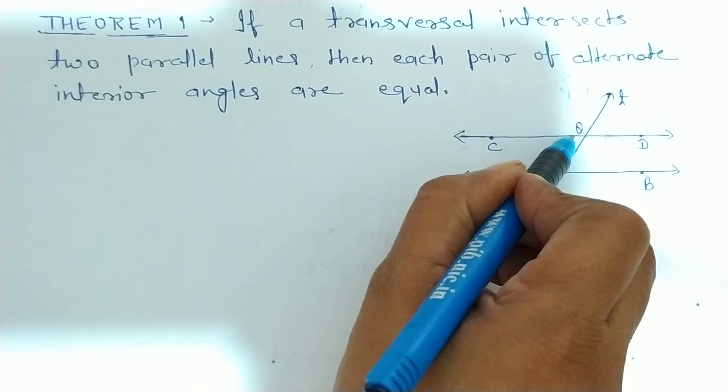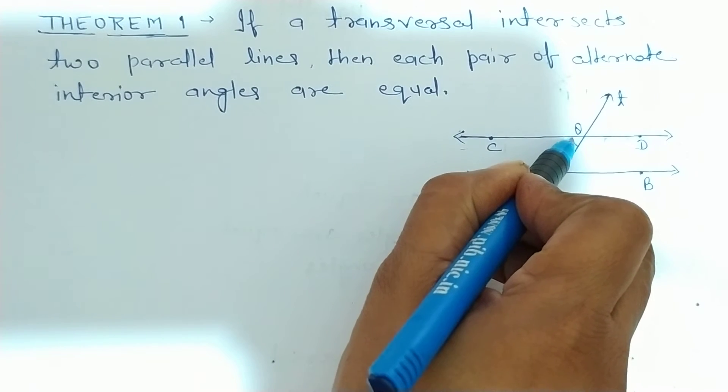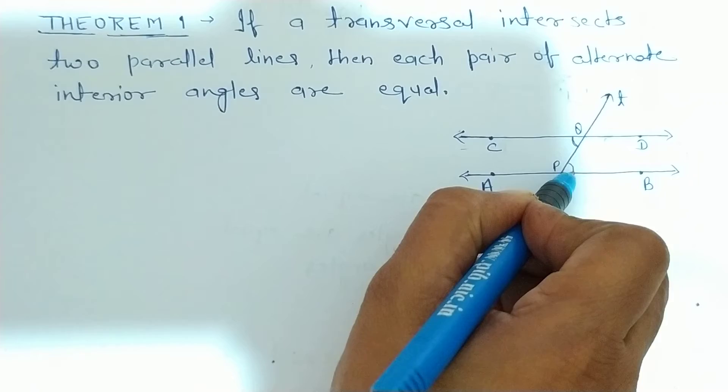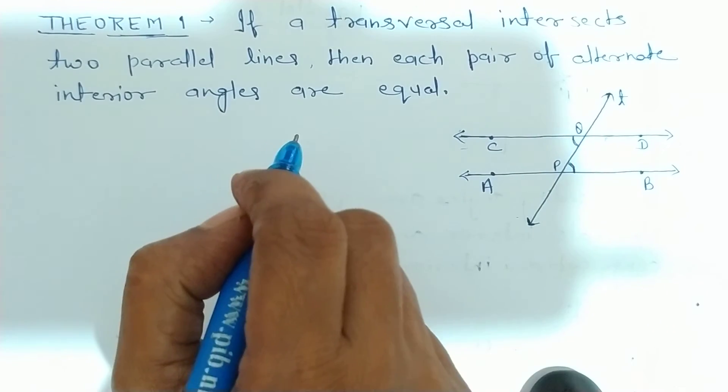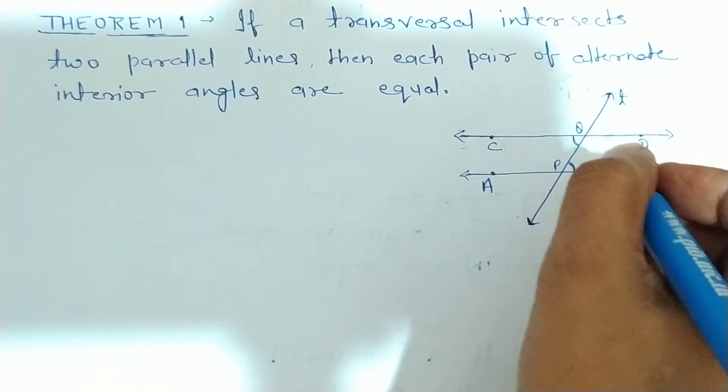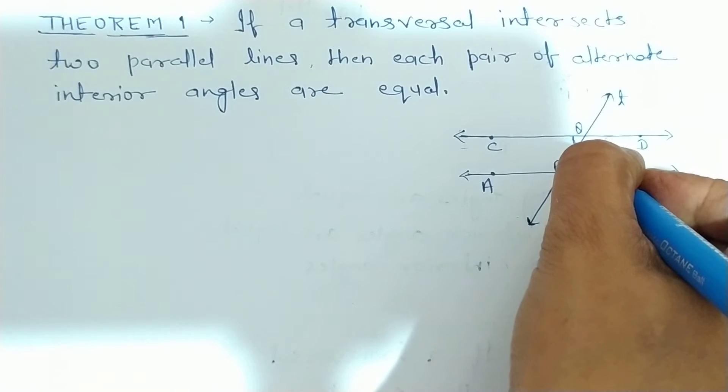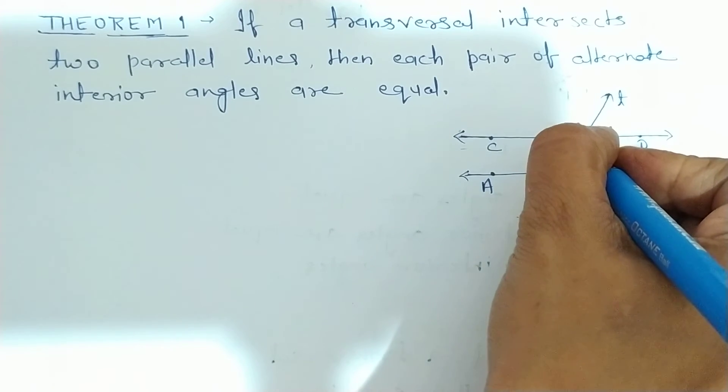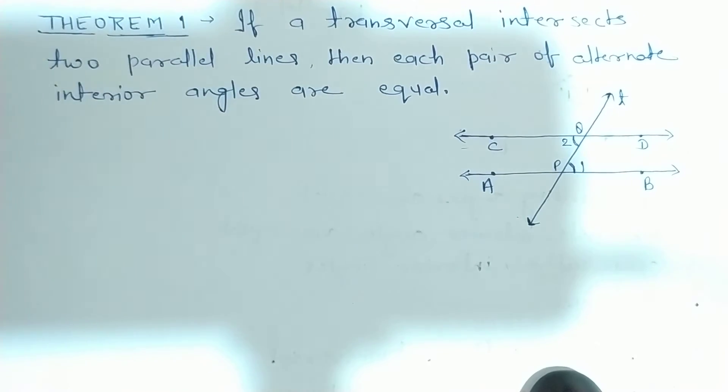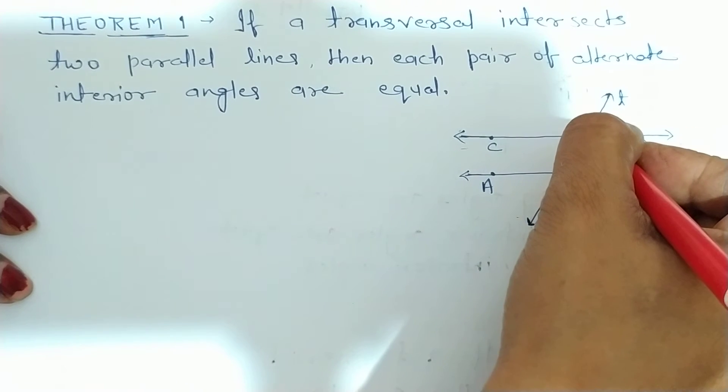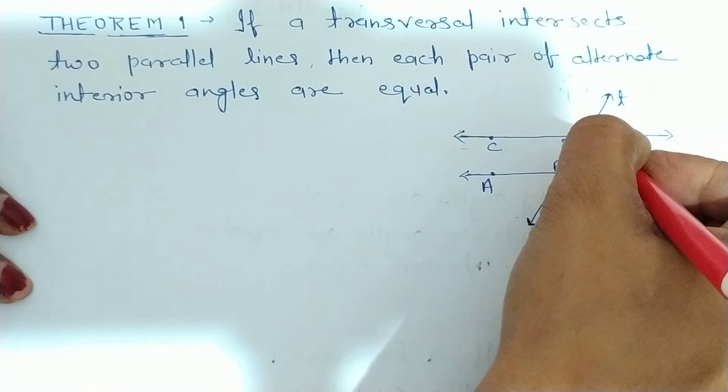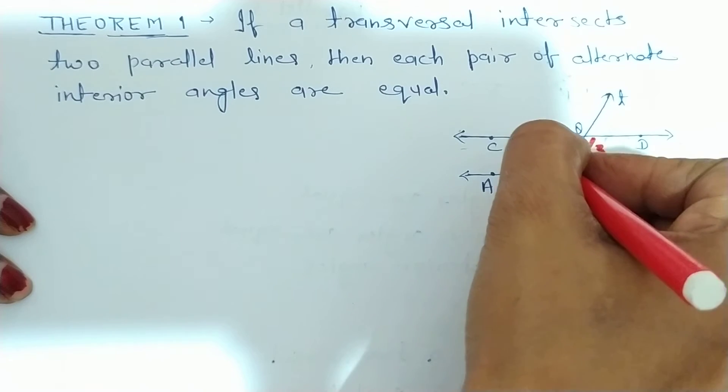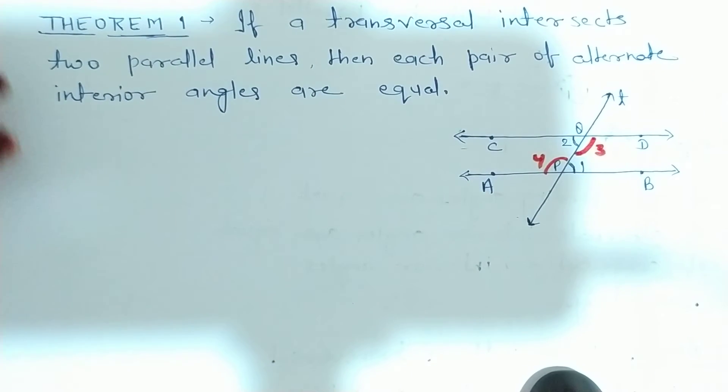To hume yeh dikhana hai ki alternate interior angles are equal. Alternate interior angles means this angle and this angle, yeh ek pair hoga hai, alternate interior angles ka. Toh yeh, iska naam, toh yeh, recognized as two angles, this angle, this angle. This angle 3 and this angle 4.